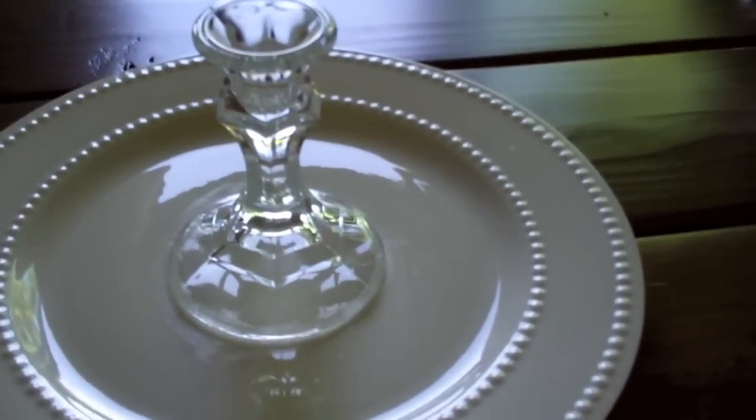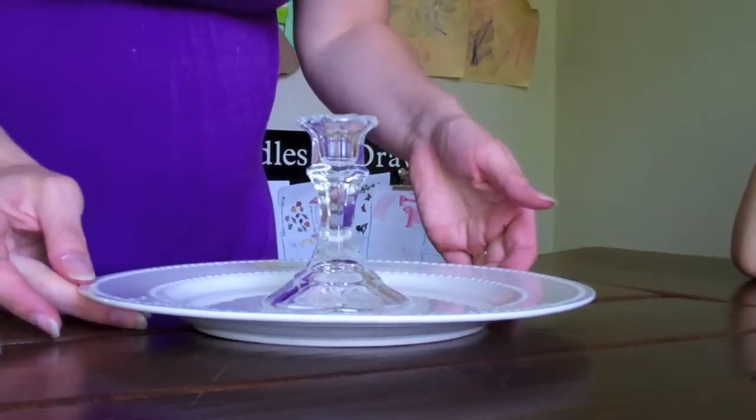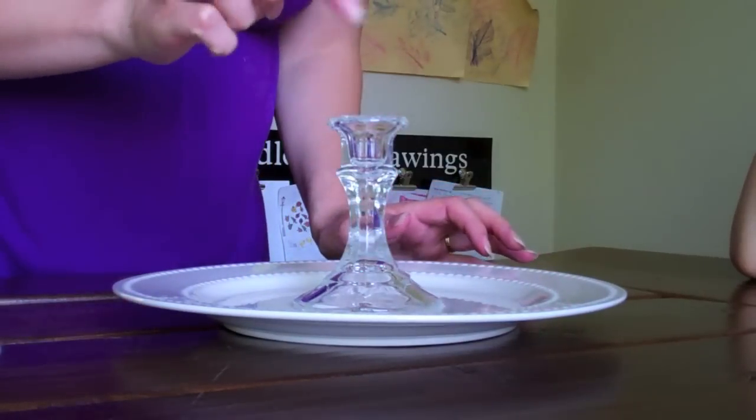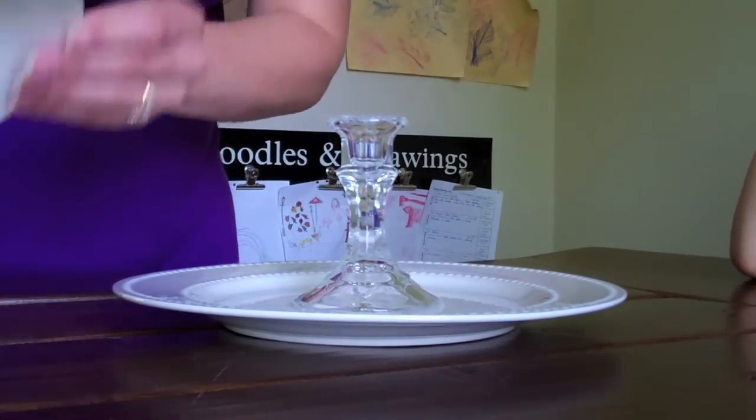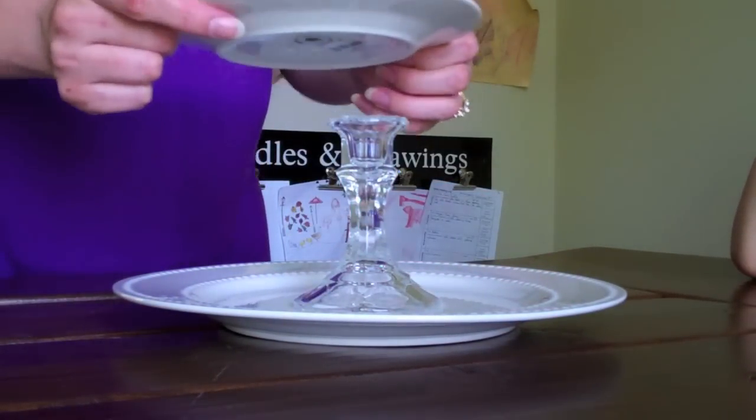You do need to use this in a well-ventilated area. Like, my patio door is open. So anyway, here we go. I'm going to put a ring around that. Okay, so I've got my ring around the top of glue. I'm getting ready to put my little plate on.